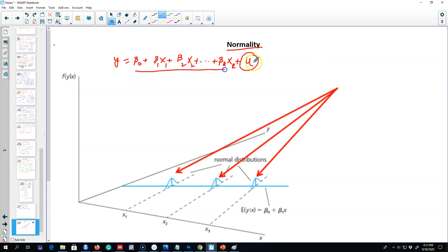For example, this is a multiple linear regression model. We are assuming about this u term that it is normally distributed with mean zero and constant variance. By constant variance, I mean that the variance doesn't depend on any of the x variables. This assumption is somewhat related to the assumption of heteroscedasticity that you saw earlier.